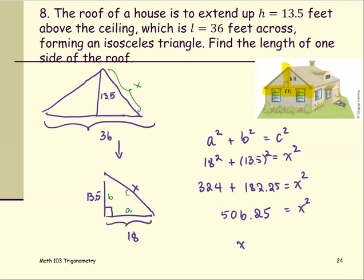To find X, we just take the square root of the value 506.25. And that will give us 22.5. And the unit is in feet as the length of one side of the roof that we are looking for.